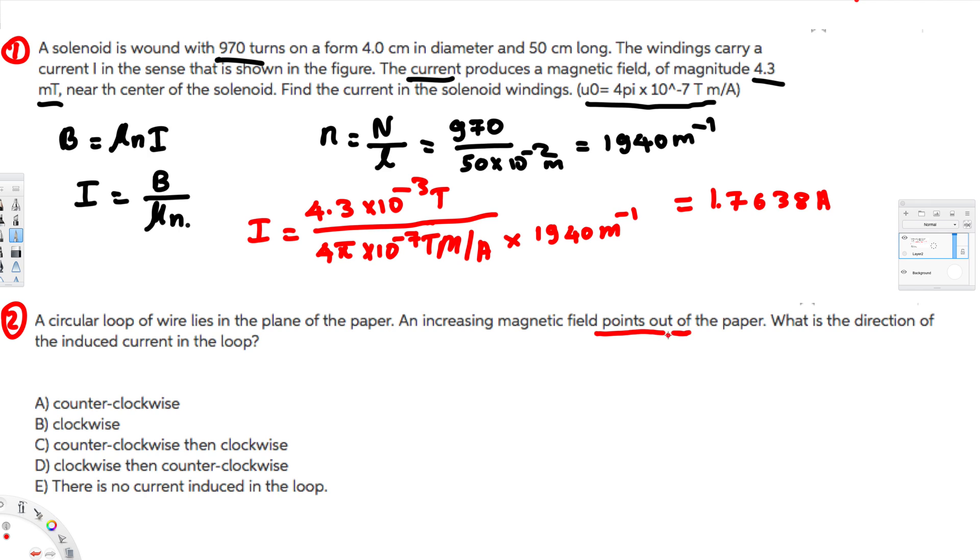They are saying the magnetic field is pointing out of the paper, so we have to use Lenz's law. Lenz's law says whatever the direction of magnetic field, we have to take the opposite direction and use the right-hand rule to find the current direction. Since the increasing magnetic field points out of the paper, we use into the paper.